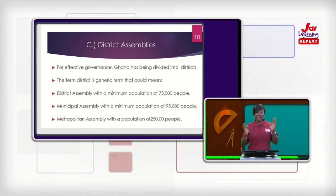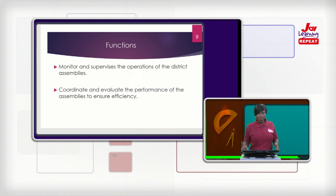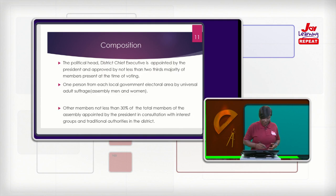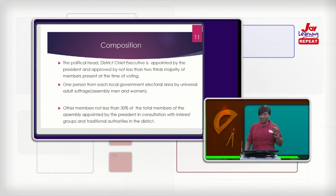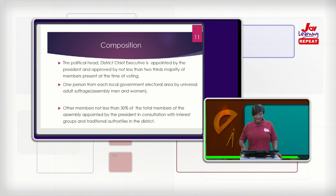This is what we call the district assembly system — these categories are found within the assemblies. Let's talk about the composition of the district assemblies. First, there is the political head, which is the district chief executive. He is appointed by the president and approved by not less than two-thirds majority of members present at the time of voting. Every assembly, whether municipal, metropolitan, or ordinary district, has its own members.